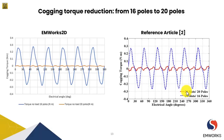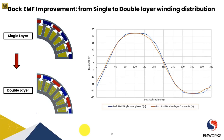Moving ahead, we compared our results to the article and observed similar trends — we have a one-to-one comparison between our software and the published electromagnetic simulation results. Next, the idea was to improve back EMF and reduce harmonic content. The motor design was switched from single layer to double layer winding configuration. It is very clear that the back EMF waveform has improved in the double layer winding case. So far, we have reduced cogging torque by increasing the pole combination from 16 to 20, and then switching from single to double layer, which resulted in better back EMF with fewer harmonic components.